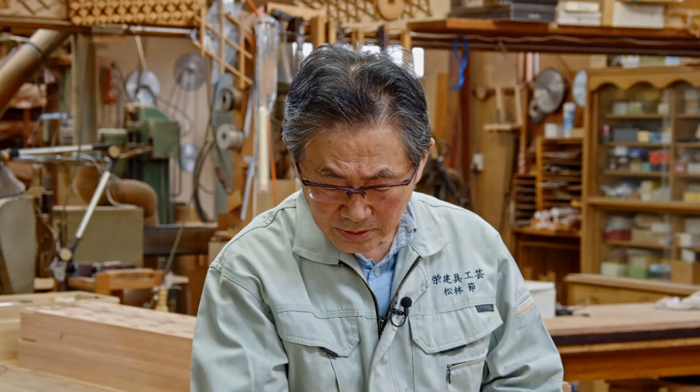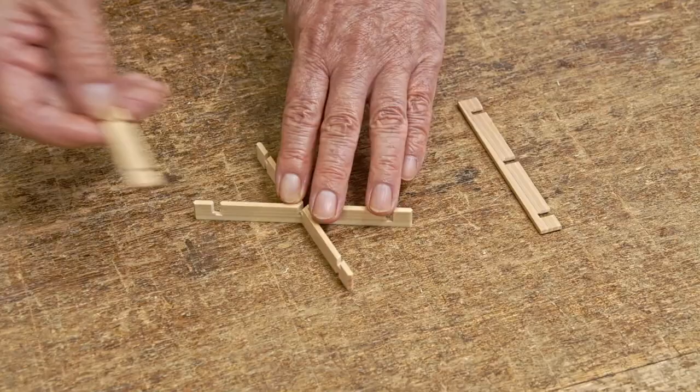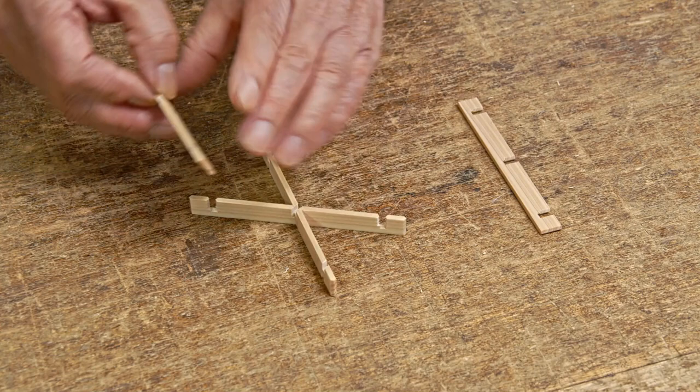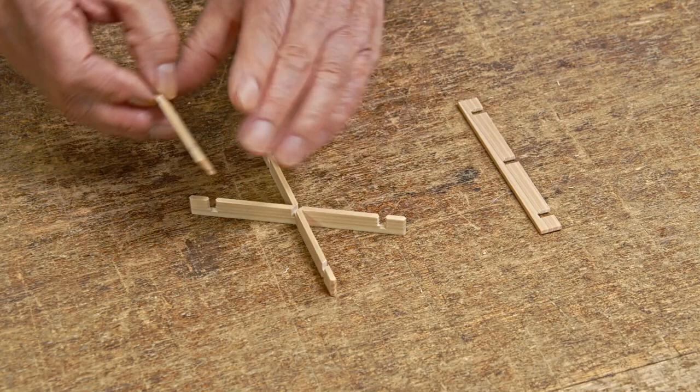We will now assemble these pieces. With this piece turned over on this side, insert one of the smaller pieces with grooves on both sides into the vertical slot.